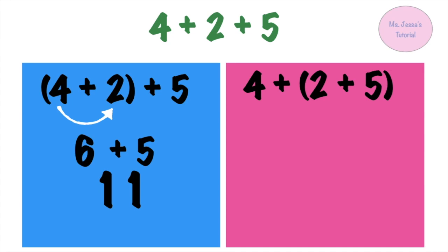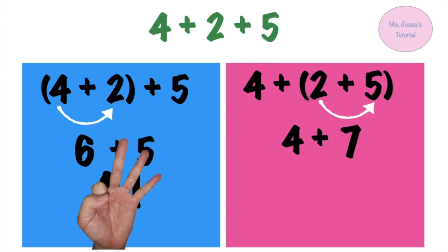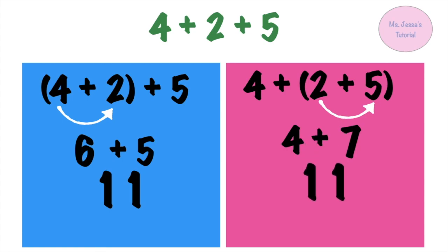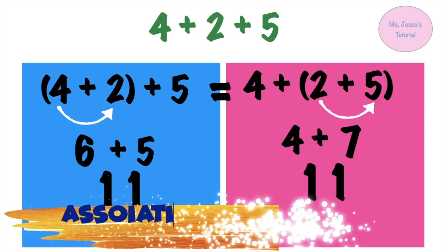Now let's solve the second equation: 4 plus the sum of 2 and 5. Adding inside the parentheses first: 2 plus 5 — 5 on your mind, 5, 6, 7 — we have 7. Then add 4: 4 plus 7 — 7 on your mind, 7, 8, 9, 10, 11. As you can see, the sum of (4+2)+5 is equal to 4+(2+5). This means that a change in the grouping of the addends does not affect the sum. This is called the associative property of addition.